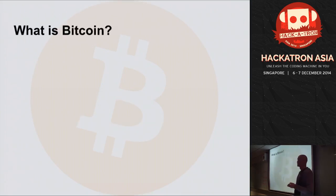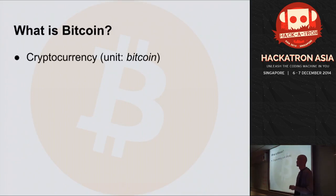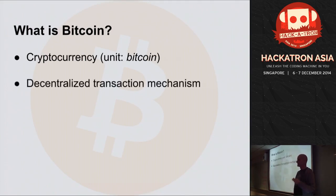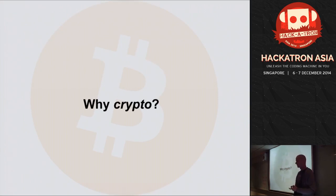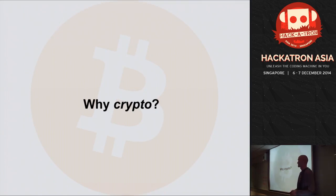First, what is Bitcoin? From my point of view, it's three things: it's a cryptocurrency with one unit, Bitcoin — capital B for the system, small b for the unit of currency. It's a decentralized payment mechanism to transfer those units of currency, and it's open source software, which is quite important for what we'll be talking about today.